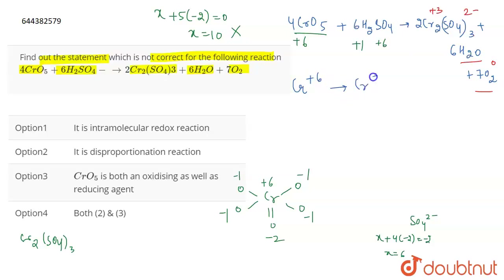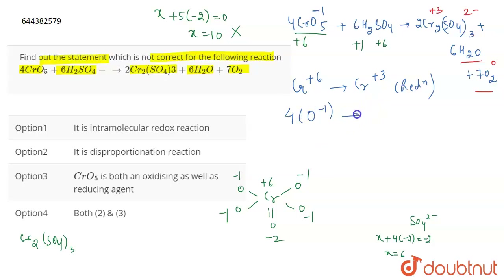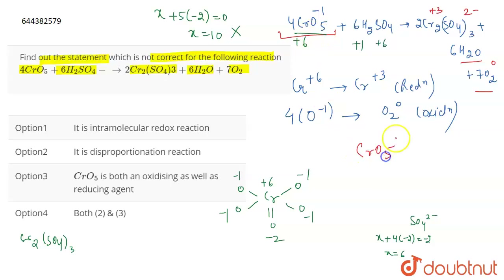So we can see that Cr goes from +6 to +3, meaning reduction is taking place. At the same time, the oxygen in CrO5 has a −1 oxidation state and changes to O2 at zero — that is oxidation. So a single compound, CrO5, is undergoing both oxidation and reduction.